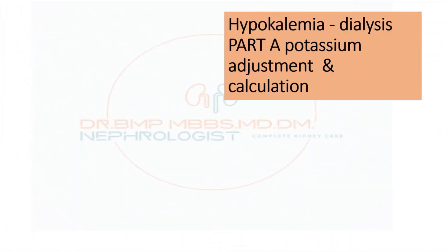Today we will see one of the most confusing calculations we usually encounter when starting dialysis for a hypokalemic patient. Since most dialysate contains potassium of 2 milliequivalents, and we want to raise it to 3 or 4 milliequivalents, we need to keep the potassium at a higher level. We will see how to do that calculation and how to adjust the potassium.